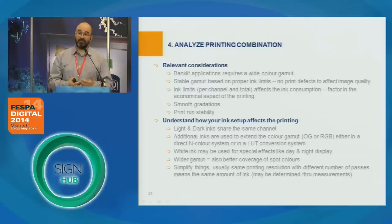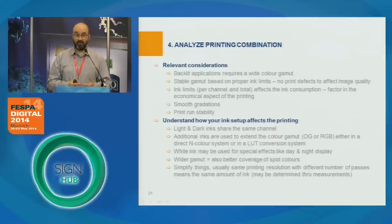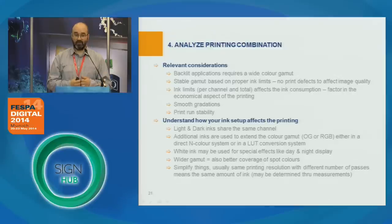Getting back to our printing system: it's obvious that light inks share the same channel with dark inks, so they only contribute to giving us more detail in printing — they are not counting towards the overall gamut size. We may have additional inks like orange and green, or red, green, and blue — specific printing systems use additional inks to extend the output color gamut. We may also have special inks like white, used in a flatbed to obtain specific effects. Keep in mind that a wider gamut also gives us a better gamut for reproduction of spot colors.